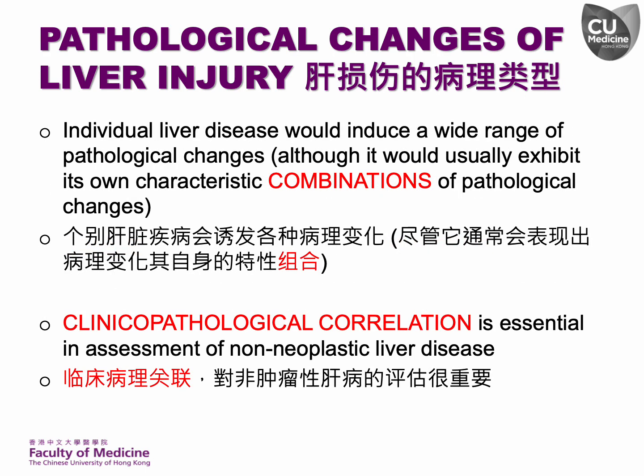We have to systematically examine and interpret pathological changes in the liver and combine these changes into a distinct histological pattern. By correlating the histological pattern with clinical, biochemical, serological and radiological information, an accurate and clinically relevant diagnosis, or at least a set of differential diagnoses, can usually be achieved. This comprehensive approach emphasizes that clinical-pathological correlation is essential in evaluating medical liver diseases.